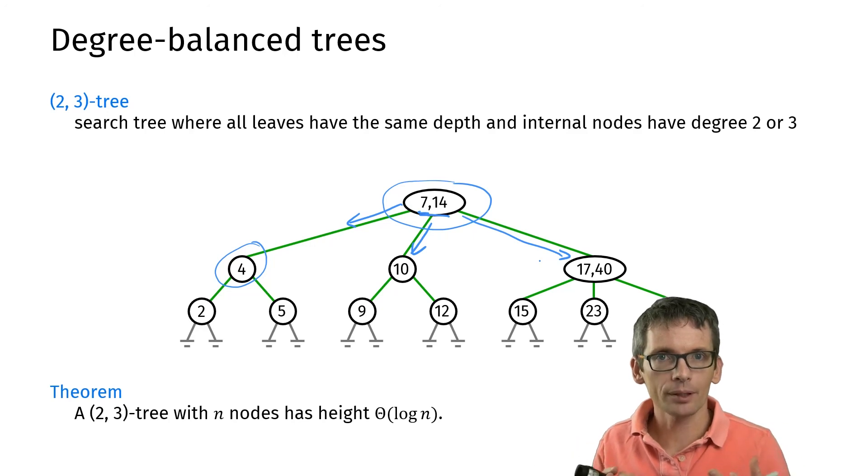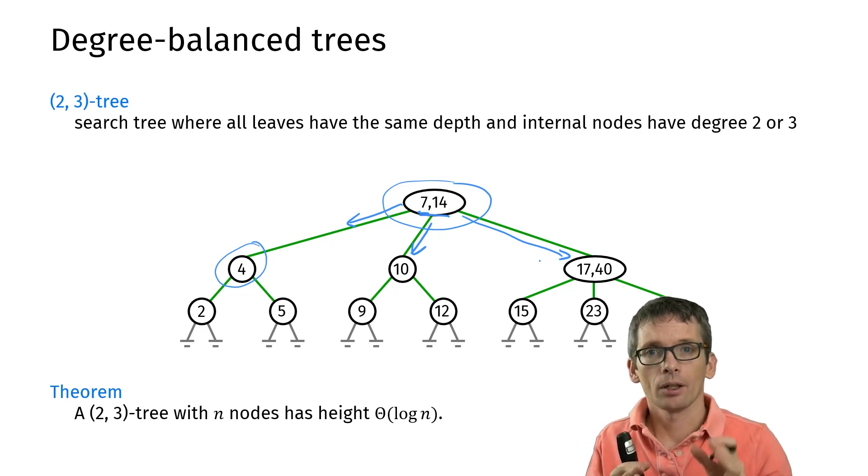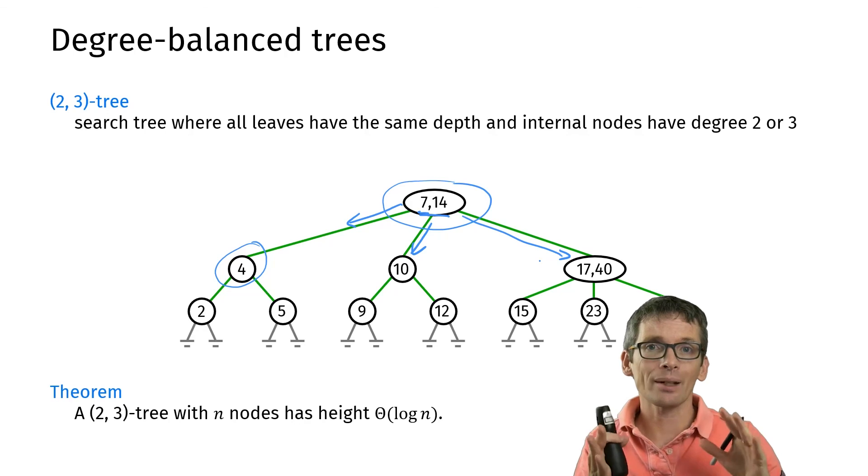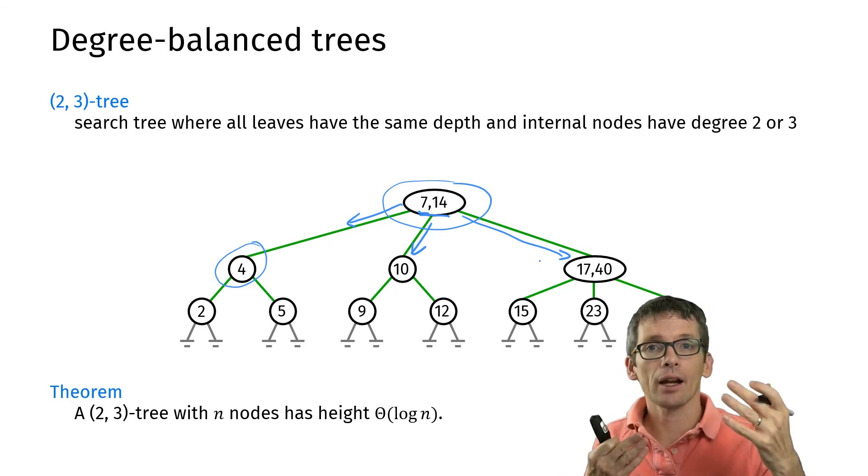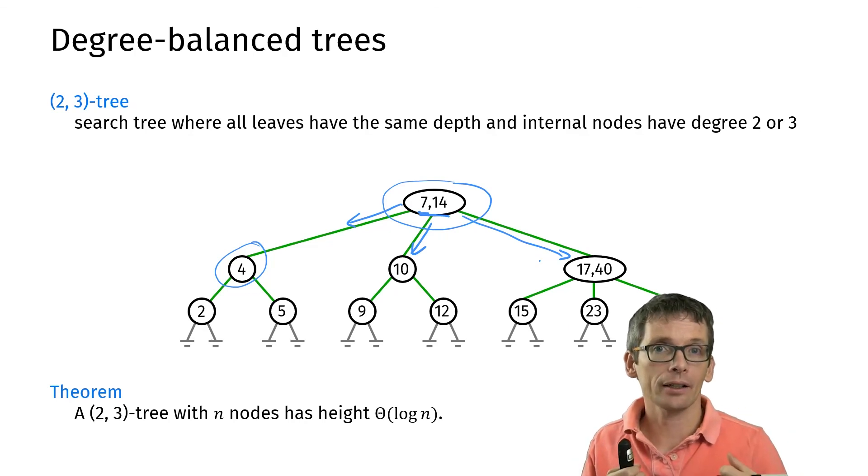So these were three examples. I didn't show any details. So I will also have a video for red-black trees. So red-black trees are an example of height balanced trees and there I will show how the balancing is actually achieved.